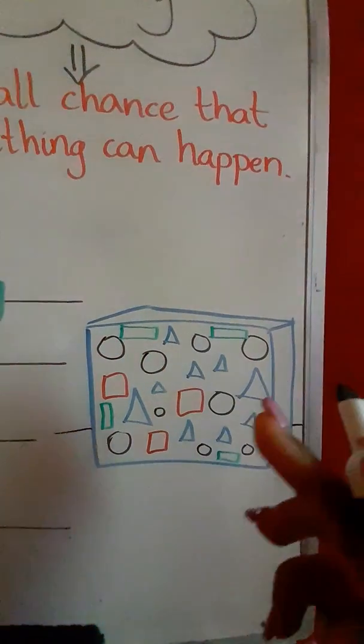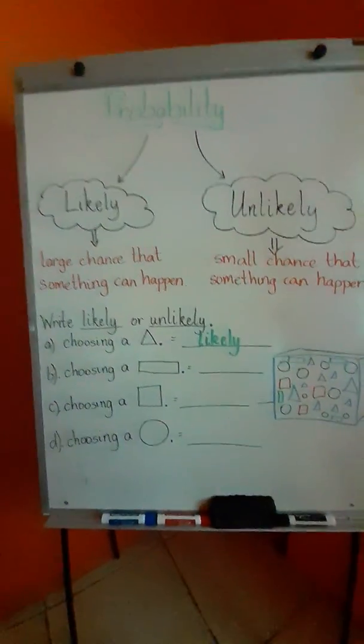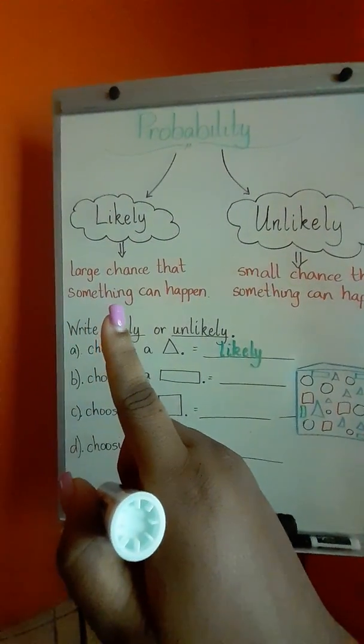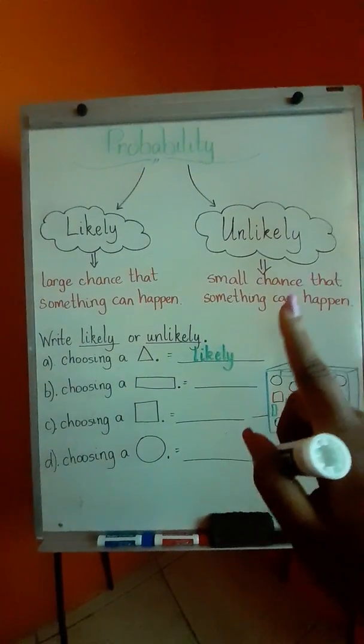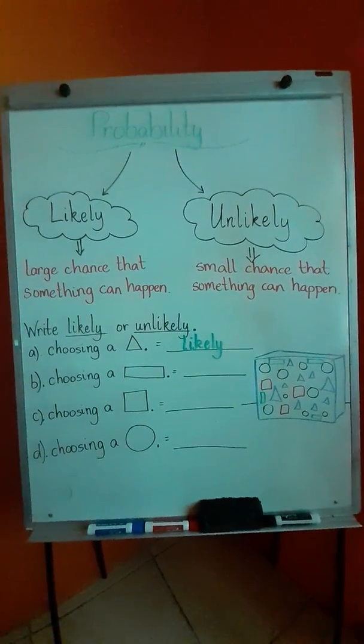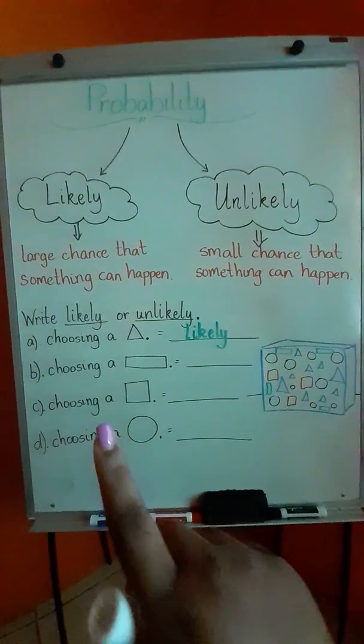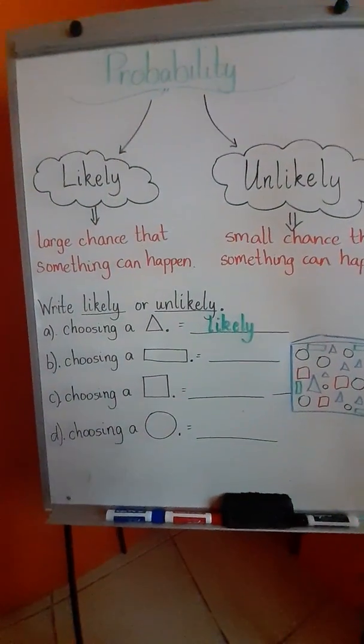I see about 1, 2, 3, 4. Can we say that it is a large chance to pull a rectangle or a small chance to pull a rectangle? The correct answer is it's a small chance. So the probability of choosing a rectangle is unlikely.